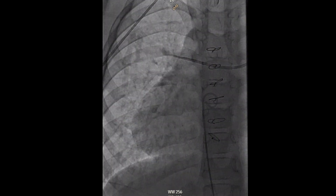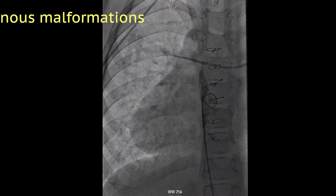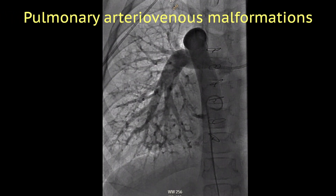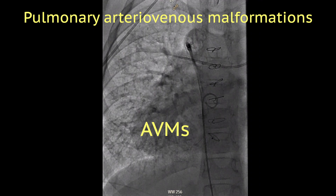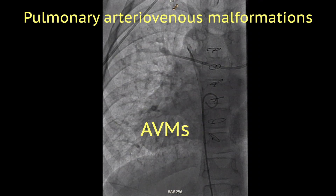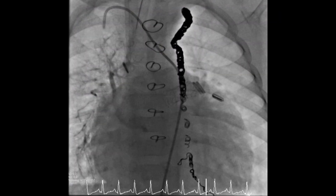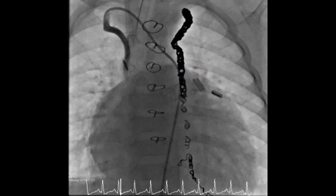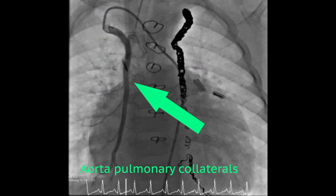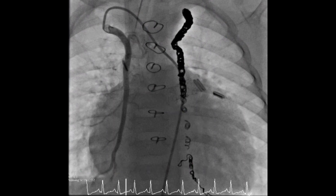Let's talk about pulmonary arterial venous malformations, AVMs. Working in the pediatric cardiac ICU, you're likely to hear about aorta pulmonary collaterals, APCs. That's more common, but a totally different thing.